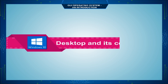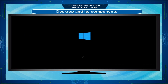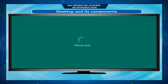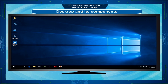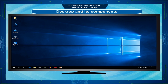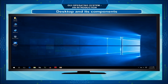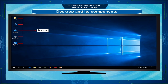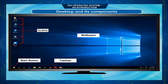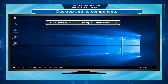When we switch on the computer, the first screen that appears after loading the Windows operating system is called the Desktop Screen or simply Desktop. It is the work area on which objects like icons, menus, windows and dialog boxes appear. The desktop is made up of 5 sections: Desktop icons, Start button, Taskbar, Wallpaper, and Date and Time.